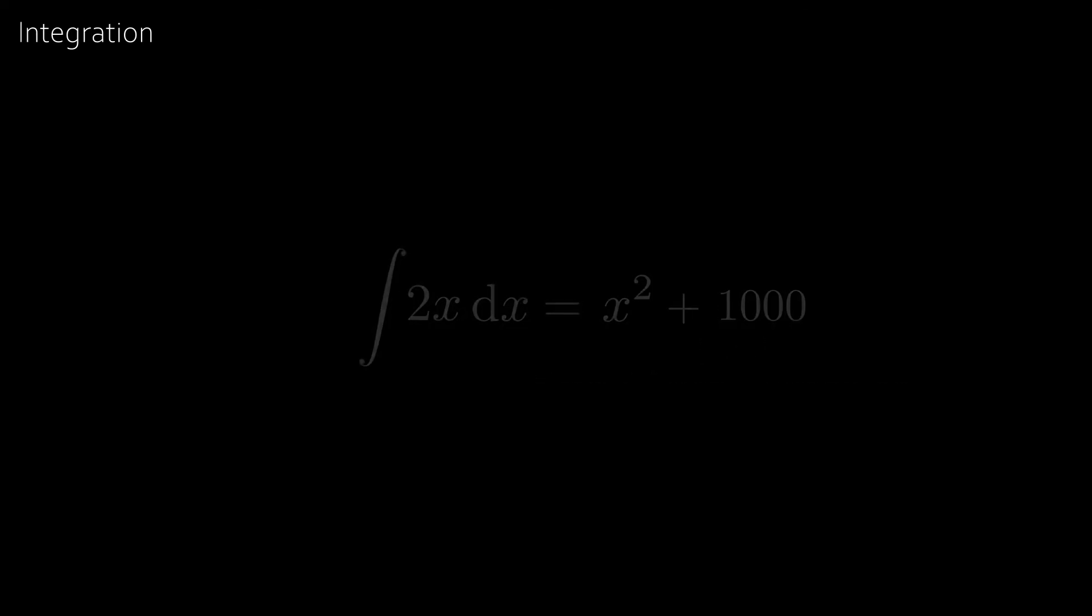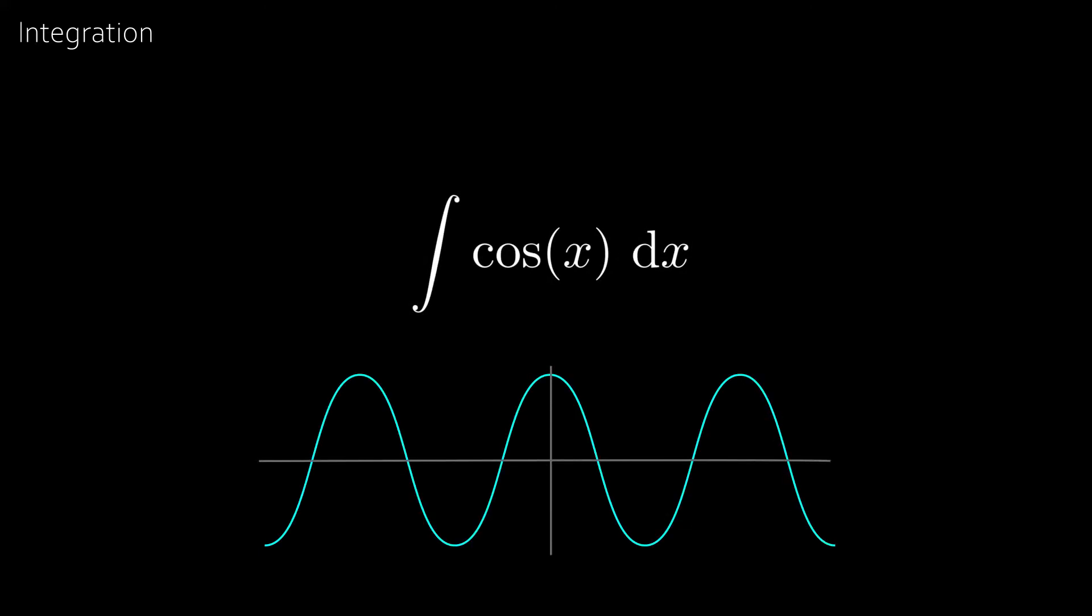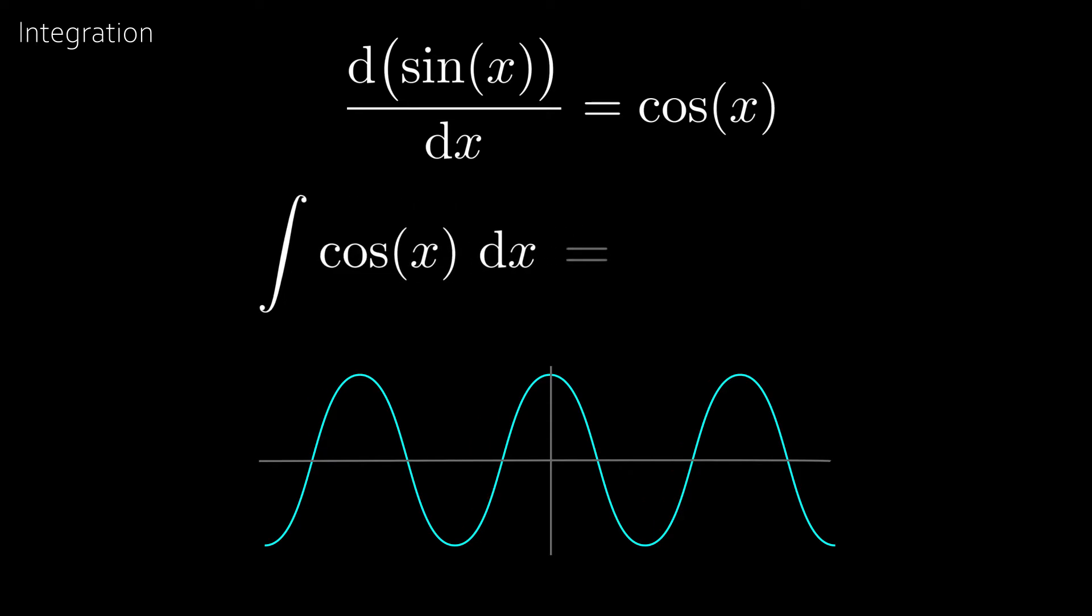Now what about the integral of cosine x? Well we know that the derivative of sine x is cosine x so the integral of cosine x is sine x plus some constant c.